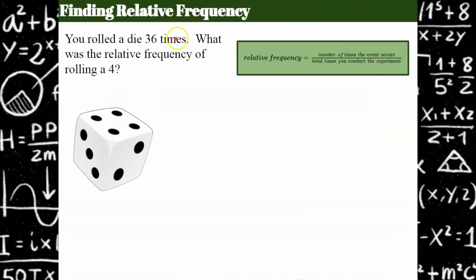We're going to find the relative frequency here. We rolled a die 36 times, and I collected the data. I'm going to roll my number cube 36 times, and I'm going to make a relative frequency table. This is how frequently I rolled a 1, a 2, a 3, a 4, a 5, and a 6. I collected my data and organized it in a table. Now, I want to know what was the relative frequency of rolling a 4.